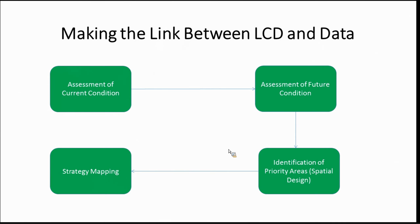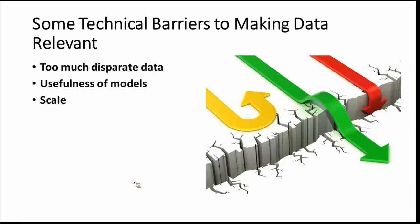Another aspect of making data and information relevant is something the open standards process really brings to the forefront: transparency. When we developed this blueprint, it was readily understandable by the people engaged, and they could communicate it to their managers and others. Having a framework that allows for transparency and feedback — where people can sit around maps and identify what makes a good versus poor aspect of the landscape for spatial design — is really important. It shouldn't be done by an analyst sitting in an office. It's a collaborative process.